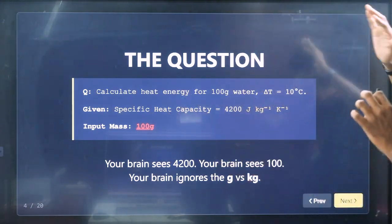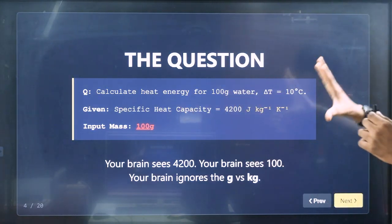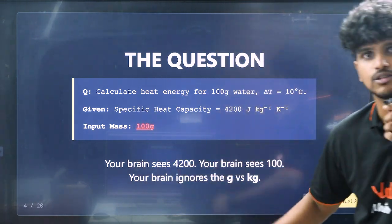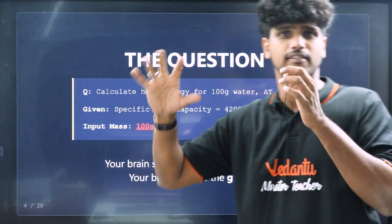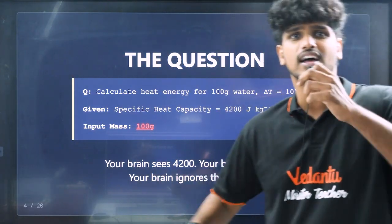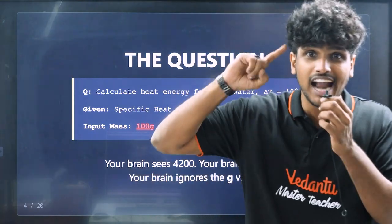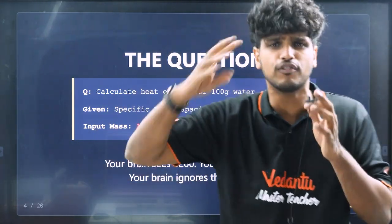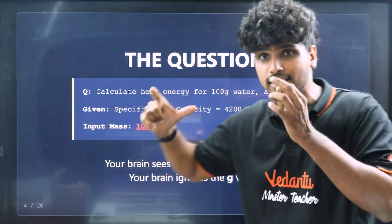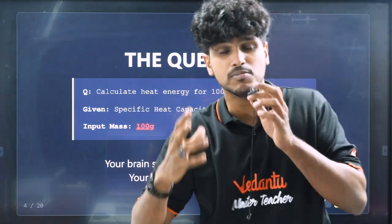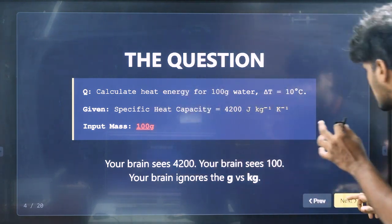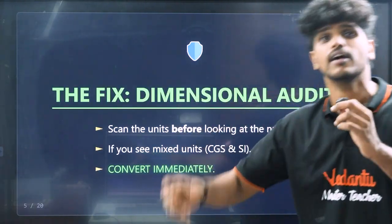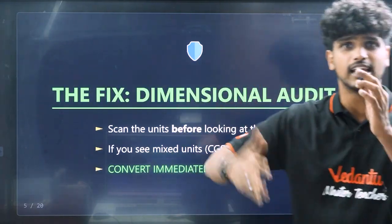You need to calculate using specific heat capacity of 4200 J/kg. But if you plug in 100 grams directly without converting to kilograms, you get the wrong answer. So how do you avoid this trap? Scan all units before you start. If you have mixed units — CGS or SI — convert them first, then solve the problem.